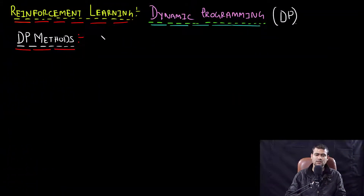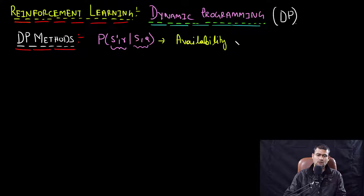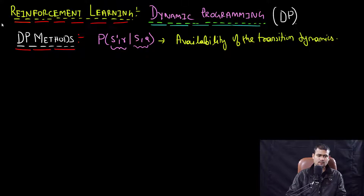The DP methods assume a perfect model of the world — that is, the transition dynamics are available. We have access to p(s', r | s, a), the joint distribution over the next state-reward pair given the present state-action pair. DP methods also assume that sufficient computational resources are available to perform the updates that the dynamic programming algorithms require.